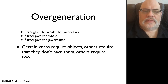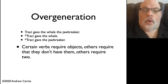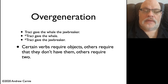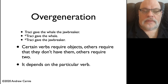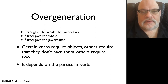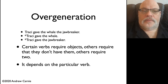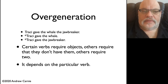What you see in this example is the same as what we saw before. The verb give requires that you have two noun phrases — the whale and the jawbreaker — and if you leave either of them off, you are going to have an ungrammatical sentence. It entirely depends upon the semantics and the particular verb that we're using. So we need to include lexical information in our system in order to restrict how X-bar theory works.